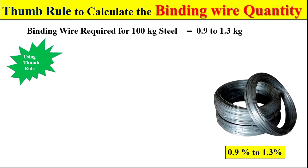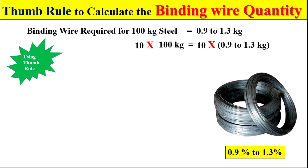By using this approach we can easily calculate the binding wire quantity for any amount of steel work. If you are interested to calculate the binding wire quantity for 1000 kg of steel work, we first multiply the left and right side by 10 to convert this into 1000 kg, and from here we can get the total quantity of binding wire for 1000 kg of steel work.